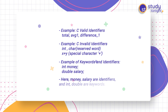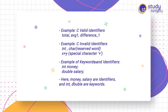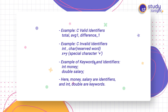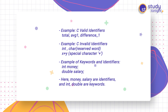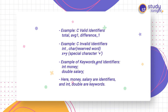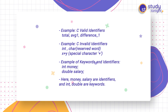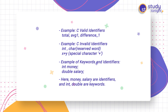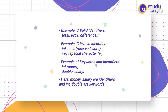Valid identifiers include: total, average1, difference1 — all starting with lowercase letters, which is acceptable. Invalid identifiers include: int and char, which are reserved words and cannot be used as identifiers. 'x+' and 'y+' contain special symbols, so they are also invalid. For examples of keywords and identifiers together: int is a keyword and money is an identifier; double is a keyword and salary is an identifier.